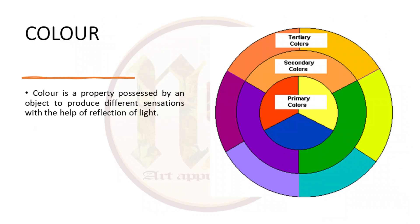The next important element is color. Color is a property possessed by an object to produce different sensations with the help of reflection of light. Light has an important role in defining a color. To understand the color wheel, you can make it by drawing three concentric circles — inner circle with primary, second circle with secondary, and third with tertiary colors.